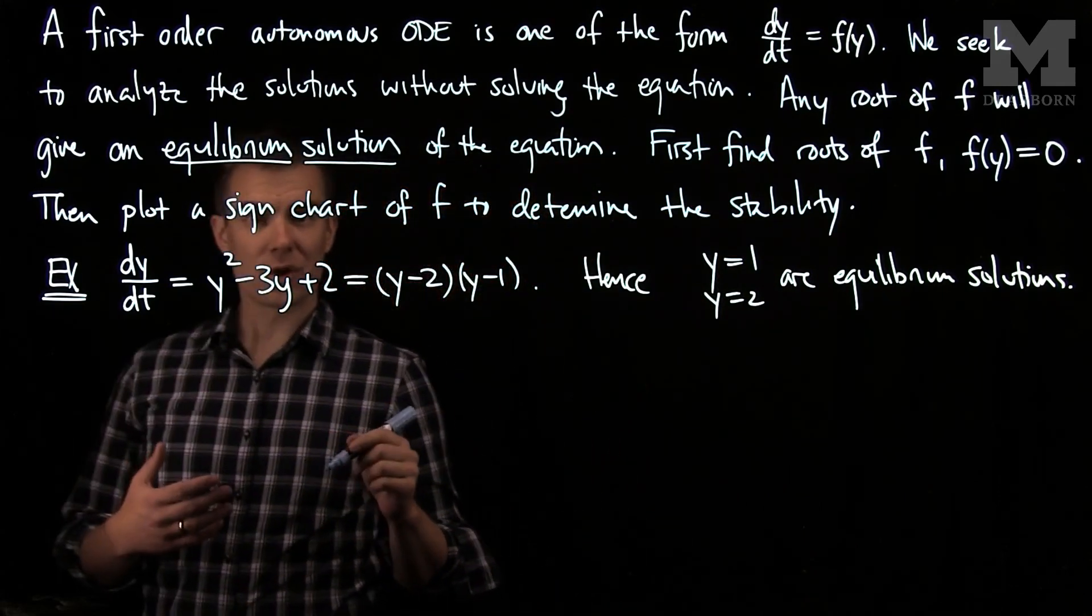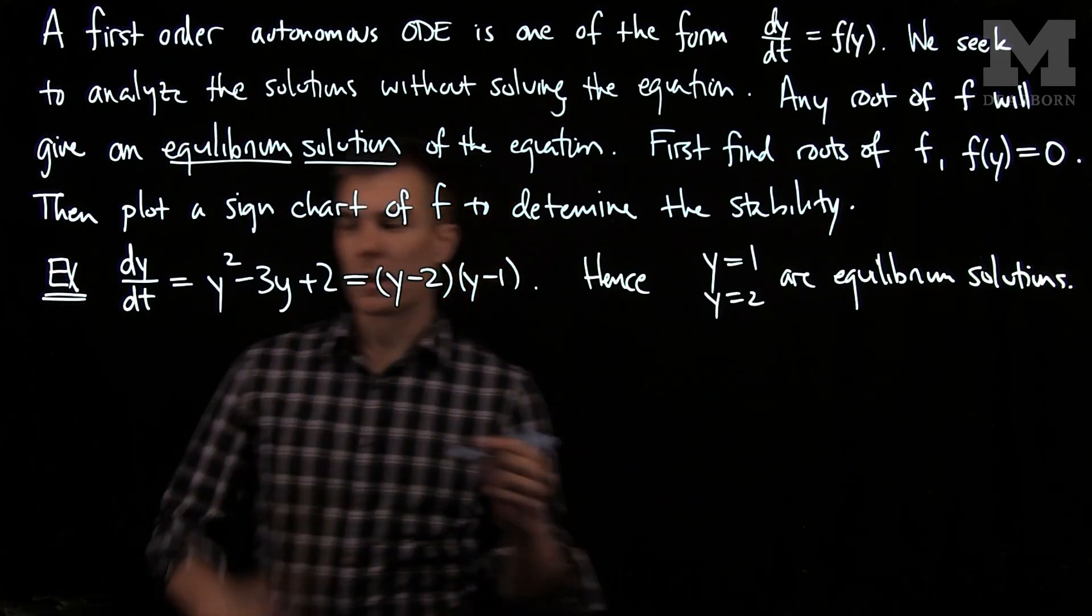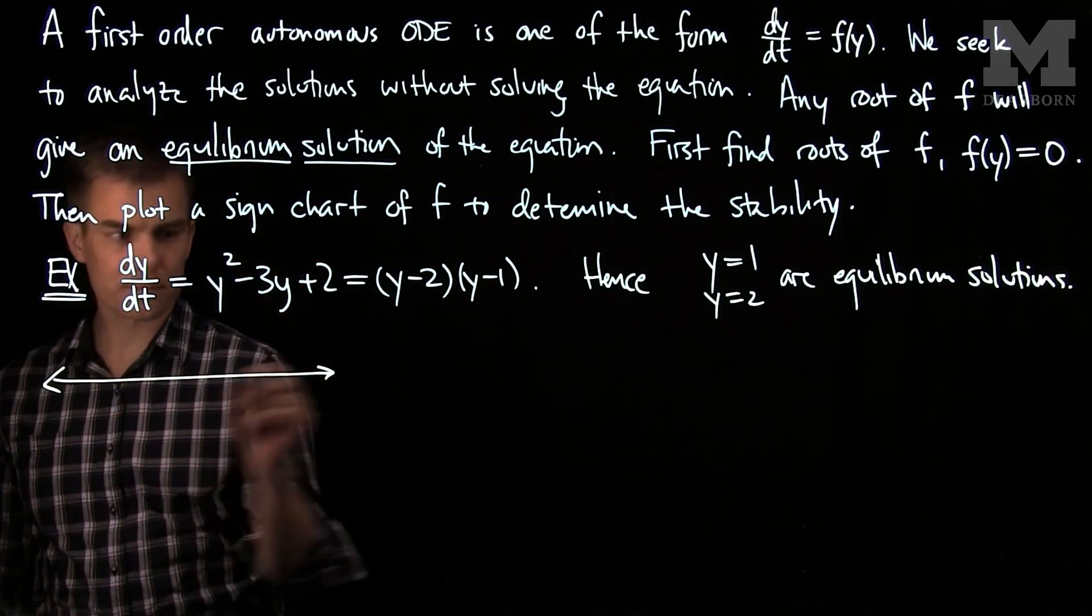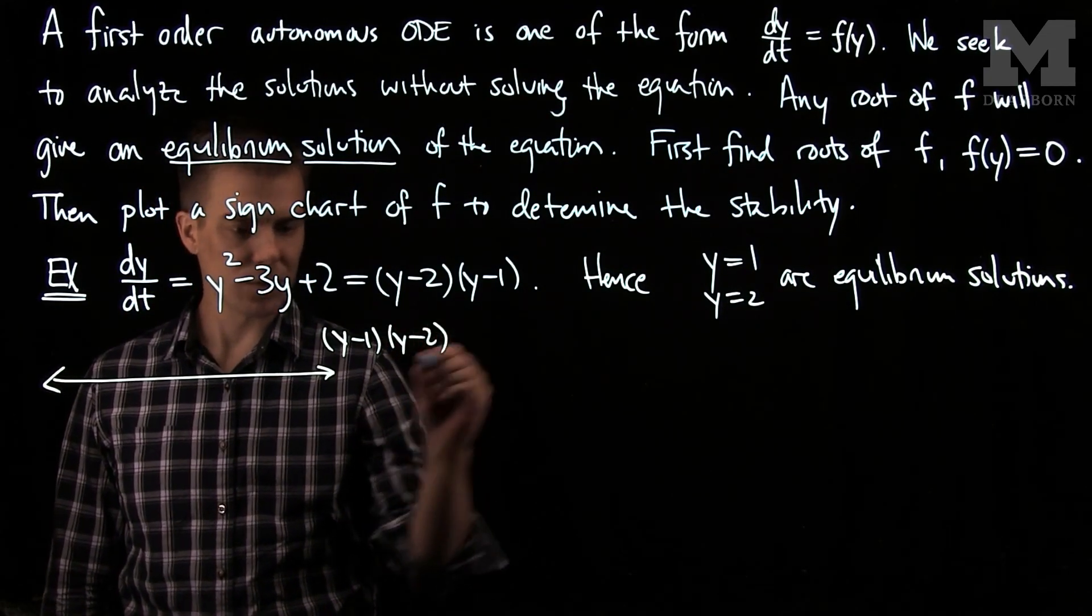Other solutions to this equation will either tend to these equilibrium solutions or diverge from them. Let's plot the sign chart of this function to see how that works. This will be the sign chart for (y - 1)(y - 2). There are zeros at 1 and 2.